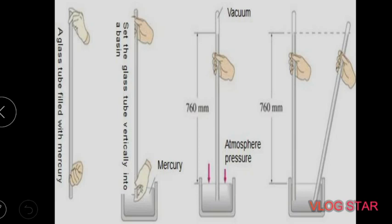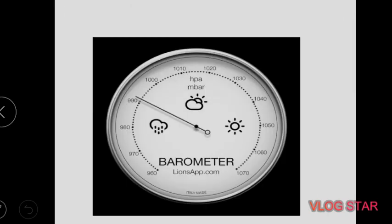They apply some pressure on your hand with a band, your body pushes back against the band, and the band measures the amount of mercury that rises in the tube — that gives your blood pressure. In a barometer, instead of water, mercury is used so that you can easily identify the atmospheric pressure.